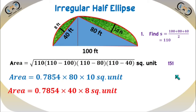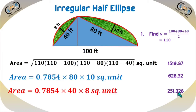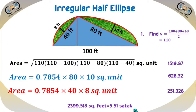Summing all three values: 1519.87 + 628.32 + 251.328 = 2399.518 square feet, which is 5.51 satoq (dividing by 435.6). So the area of this irregular half ellipse type shape is approximately 2399.518 square feet. Here we just used the triangle formula and the half ellipse formula. Using these two formulas, we can measure maximum types of lengths — whether one side is curved, two sides curved, three side curve, or four side curve — no problem.